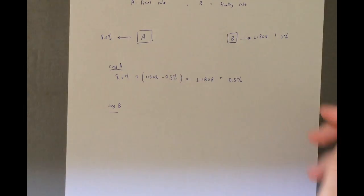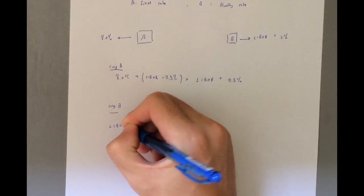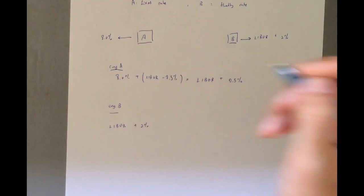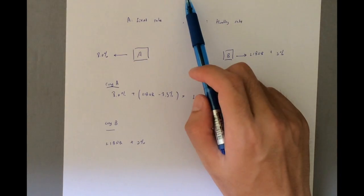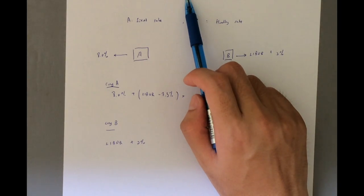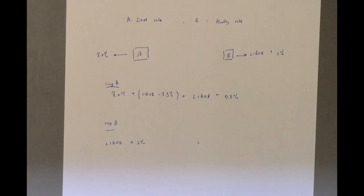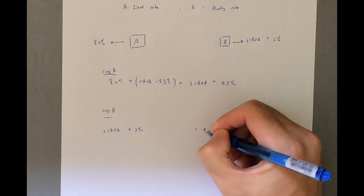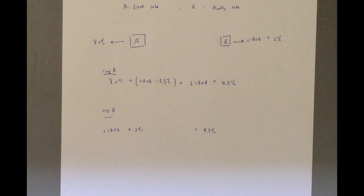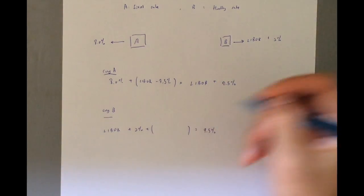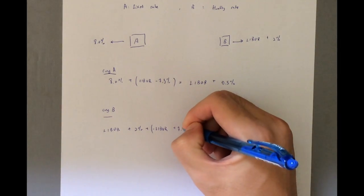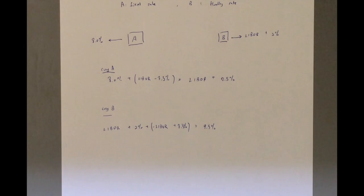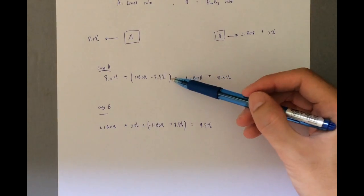Alright, so B was initially paying LIBOR plus 2%. Okay, if it goes to a bank directly, it will pay a fixed rate of 10%, but because it is going to share the gains by swapping among themselves, it's now going to pay 9.5%, which is 10% minus 0.5%. Right, so how do we get from here to here is we need to have a change of minus LIBOR plus 7.5%.